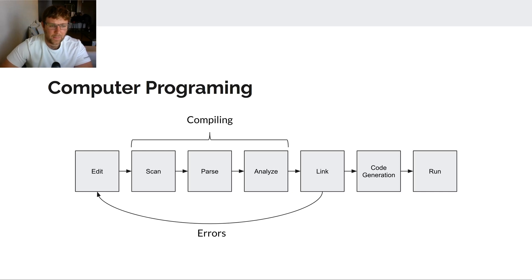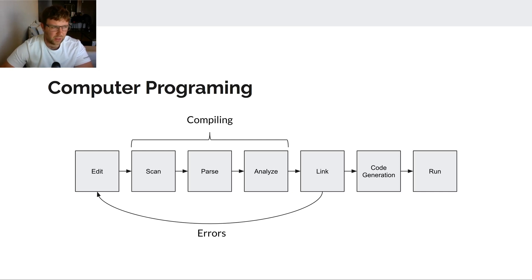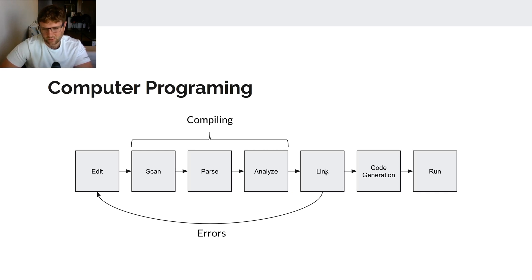In general, here's what happens throughout computer programming: we edit our source code, then when we compile there are three main stages — scanning, parsing, and analyzing. We also have the additional step of linking with other libraries, then we generate code and run. At any of the scan, parse, or analyze stages we might get compiler errors; errors during linking are called linking errors. If we have errors, we go back and edit and do it all over again.